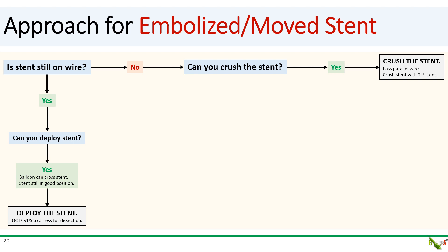If your stent is not on the wire, ask yourself whether you can crush the embolized stent in place. If yes, pass a parallel wire — ideally adjacent to the embolized stent — and crush it with a second stent. Passing that wire could be quite tricky, especially if the embolized stent is mangled or misoriented. Your wire might go through the embolized stent struts rather than next to it, but that's okay — you'll just need to dilate the stent cell with a balloon before passing your second stent to crush.